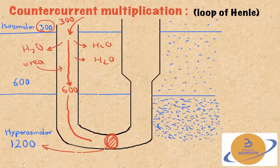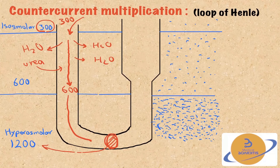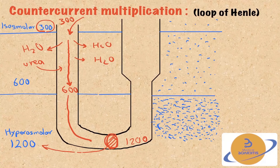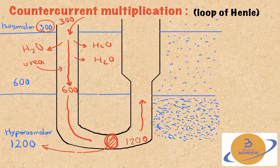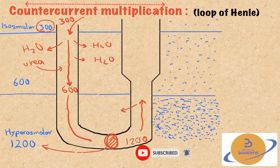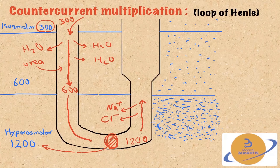As we move down the thin descending limb, the osmolarity of the tubular fluid equalizes with that of the medullary interstitium, reaching around 600. Continuing all the way to the lowest point of the loop, we reach the highest osmolarity of the tubular filtrate — let's say 1,200 — because this is where the medullary interstitium near the renal papilla is the most concentrated.